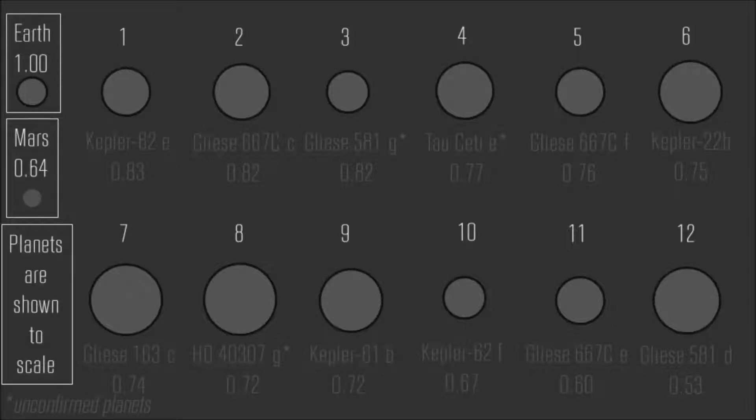As of June 27, 2013, astronomers have found 12 potentially habitable exoplanets.